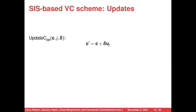Stateless updates for commitments and proofs fall out naturally from the fact that both the commitment function and the proof function are linear. We simply multiply our delta between the old entry and the new entry by the appropriate U_j, or R_{ij} in the case of update proof, and add that to the old commitment or proof respectively.